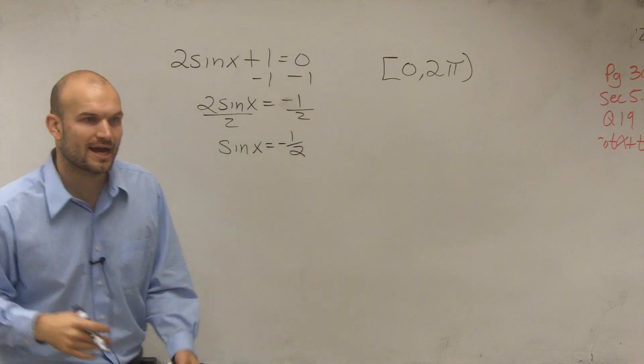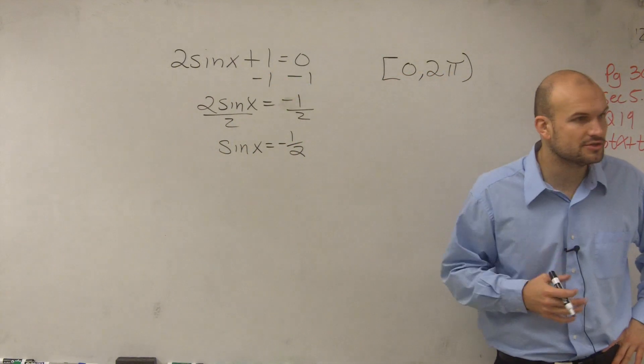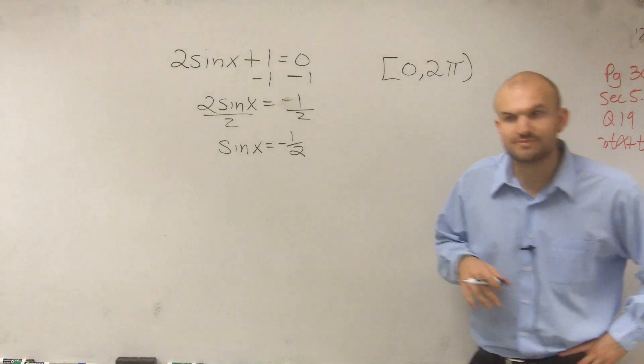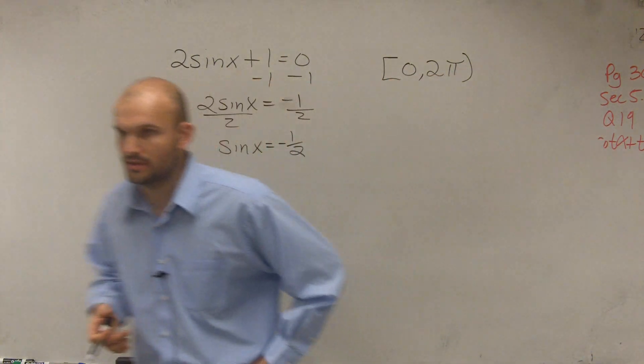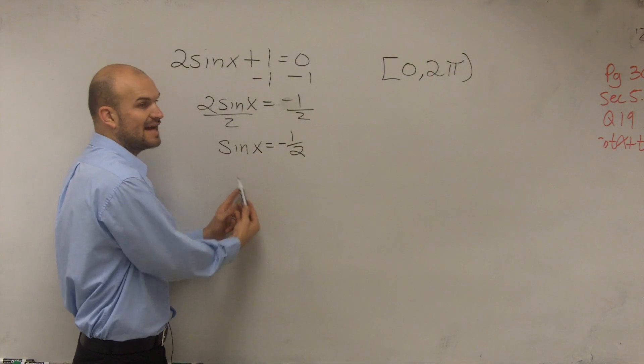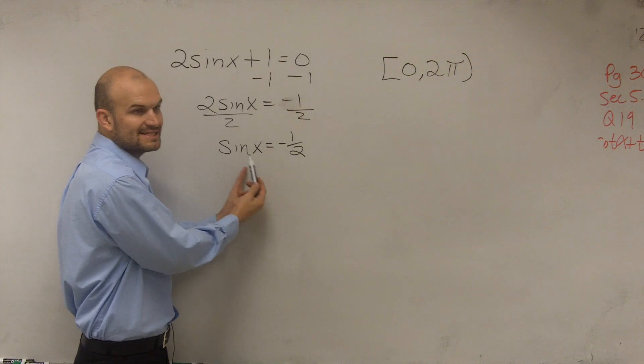Does everybody follow me how I get to this by isolating my trig function? OK. So all we're going to do is work on isolating the trig function. Now, once we've isolated the trig function, now what we can do is go ahead and solve for this. This states the sine of an angle equals negative 1 half. What is that angle?